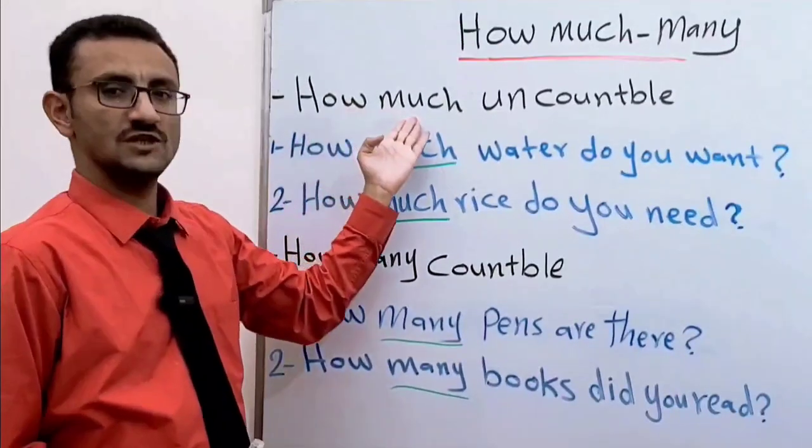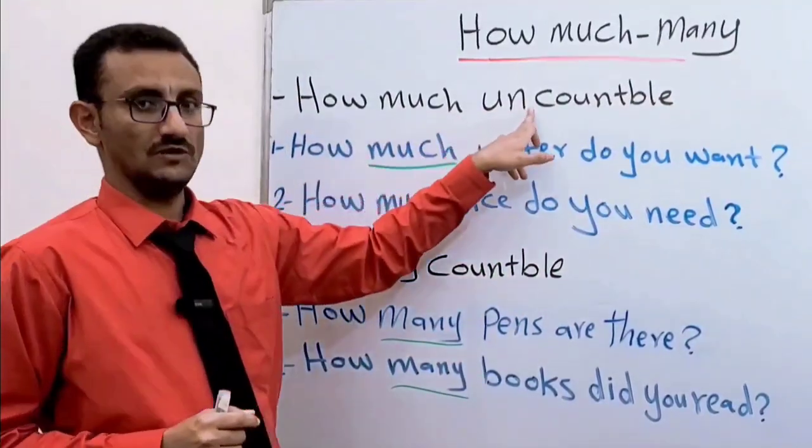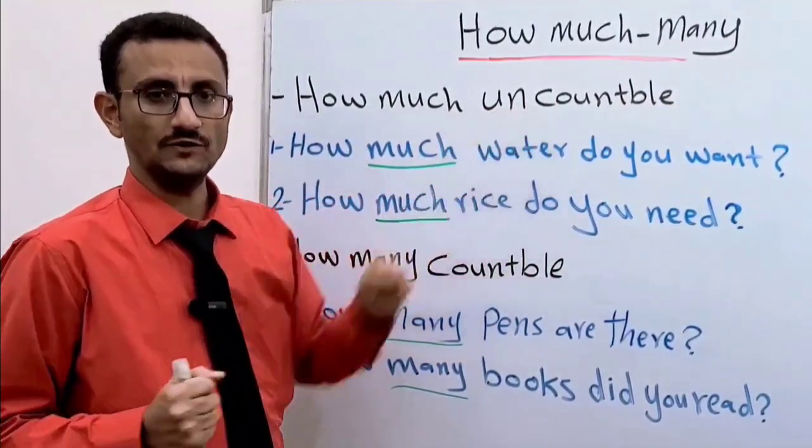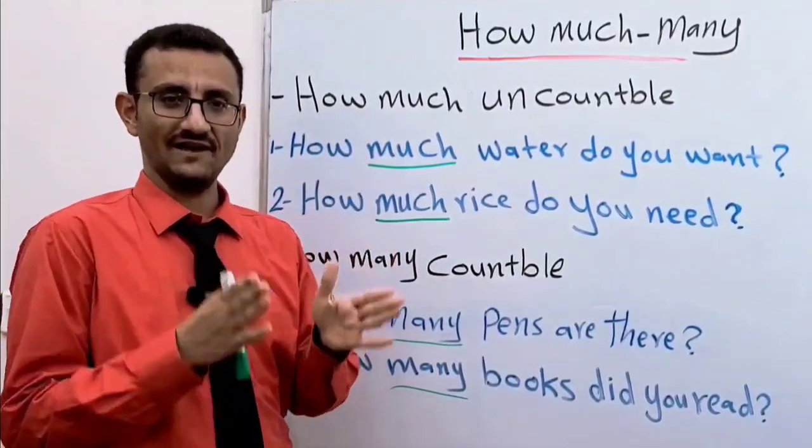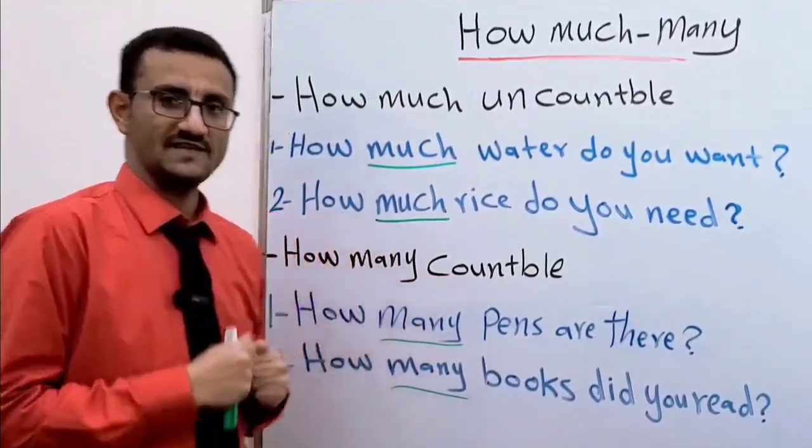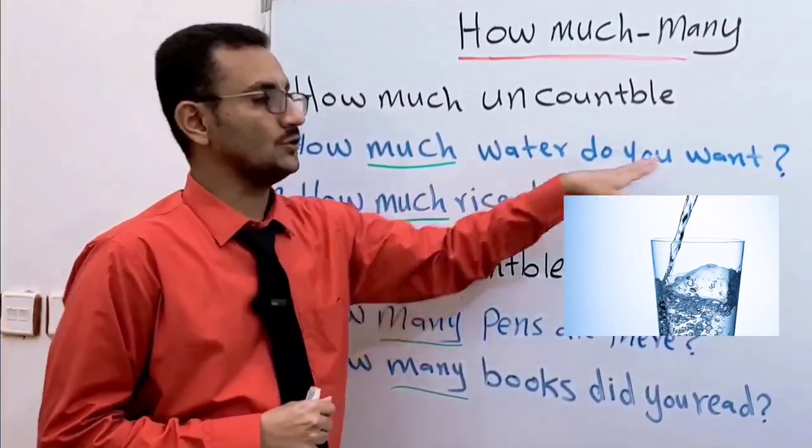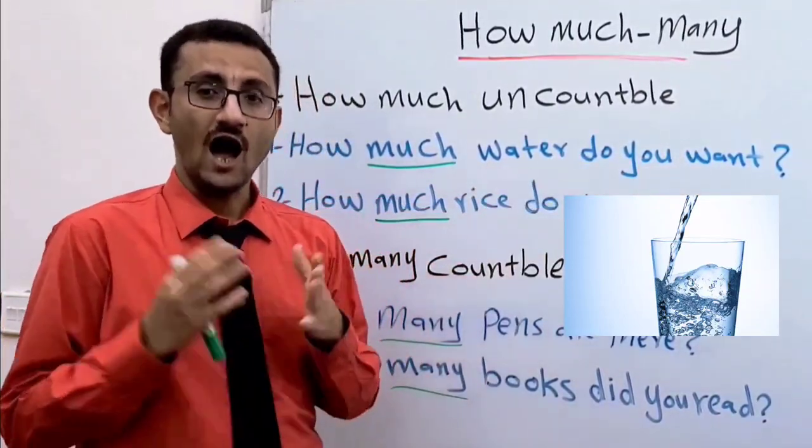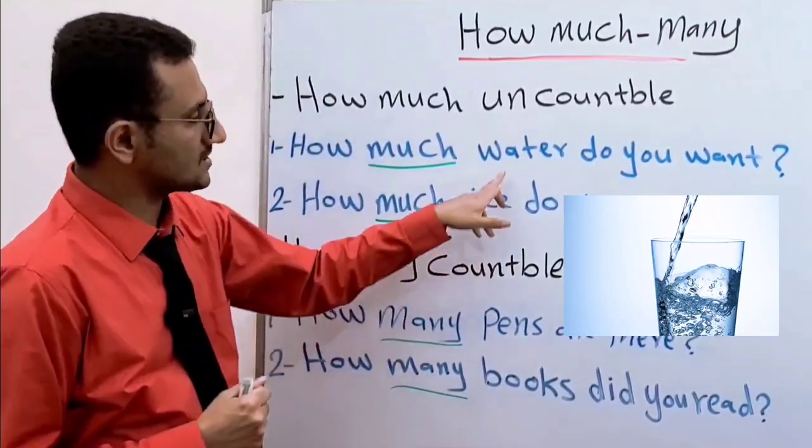Let's go. We have 'how much' which is used for uncountable nouns. Uncountable معناها غير معدود, so we use 'how much' with uncountable nouns. For example, how much water do you want? Here the word water is an uncountable noun.